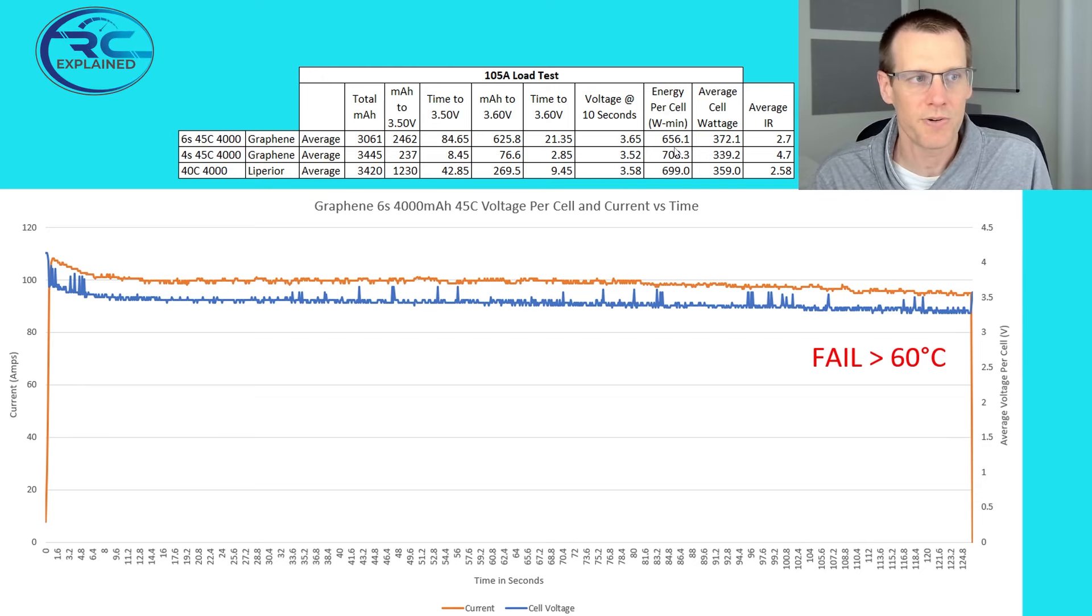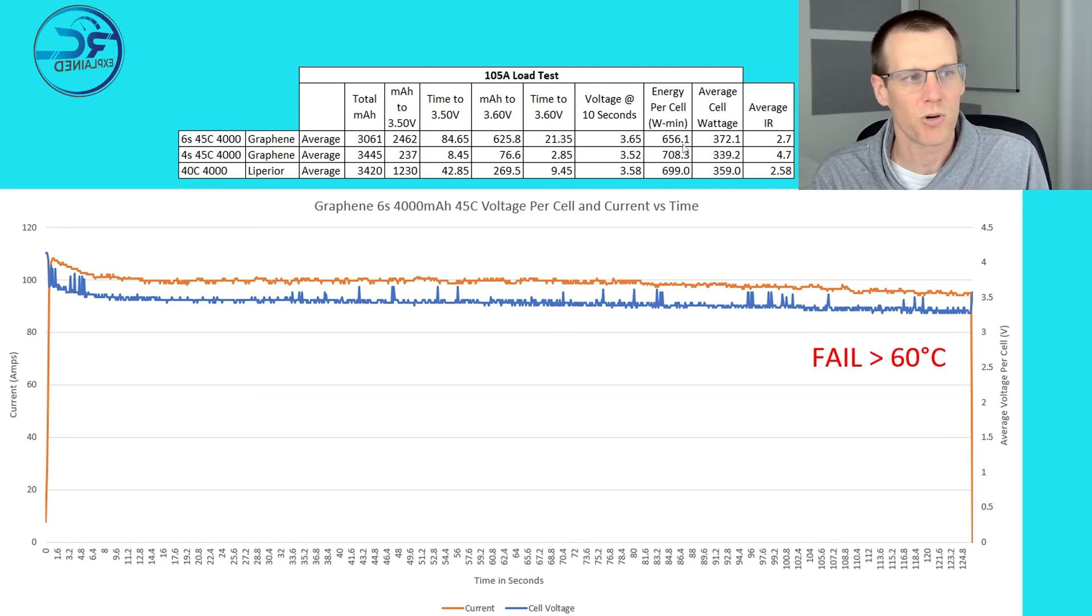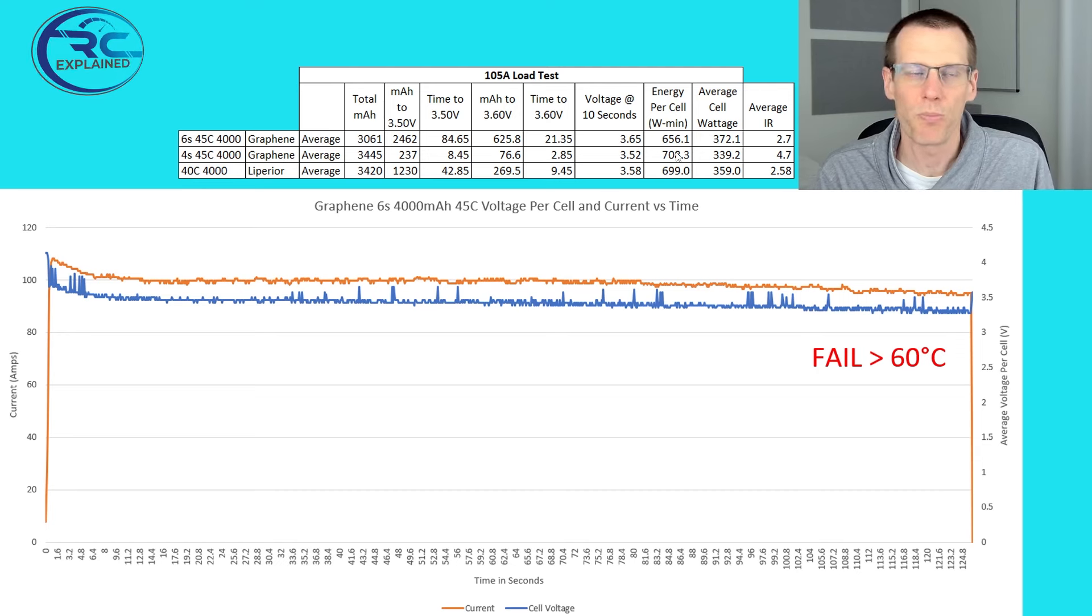And then when we look at the energy per cell, this relates the amount of total capacity that we drew. So not super critical. This battery ended up getting 656 versus the other 4S pack that we did got 708. But that's because the 6S was cut at the more appropriate time. And you can see the average cell wattage is the highest for our 6S graphene. So when it comes to does this battery actually, is it good or does it suck?